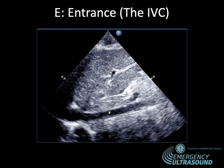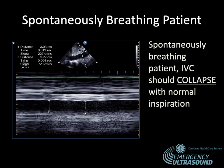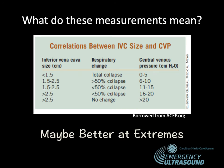Our final E is the entrance — the IVC. We look for the confluence of the IVC as it enters the right atrium, and also identify the confluence of the hepatic veins entering the IVC. We look distal to the hepatic vein confluence for a normal pattern of collapse with respiration. In a spontaneously breathing patient, the IVC should collapse with normal inspiration. Correlating IVC size to central venous pressure works best at extremes — a plethoric, large non-collapsible IVC versus a completely collapsible small IVC.